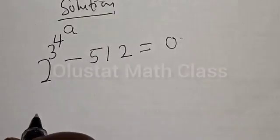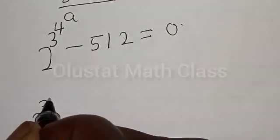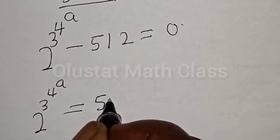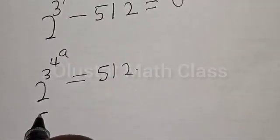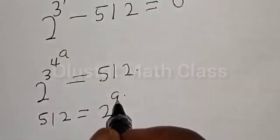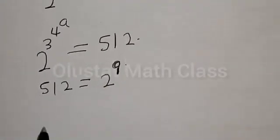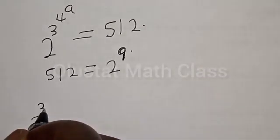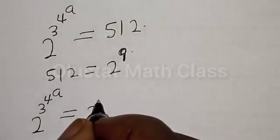Then we have 2 raised to power 3 raised to power 4 raised to power a is equal to 512. Now let's work on this. 512 is equal to 2 raised to power 9. So we have 2 raised to power 3 raised to power 4 raised to power a is equal to 2 raised to power 9.